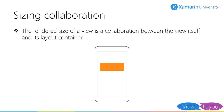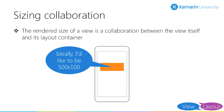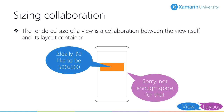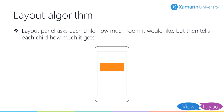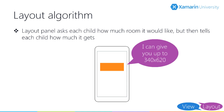Let's start with a core concept. The actual size that a view ends up is a collaboration between the view and the panel that contains it. Here we have a view sitting inside a panel, and the core idea is that the view isn't the one that's really in control. The view says its preferred size, but then the panel has the final decision.